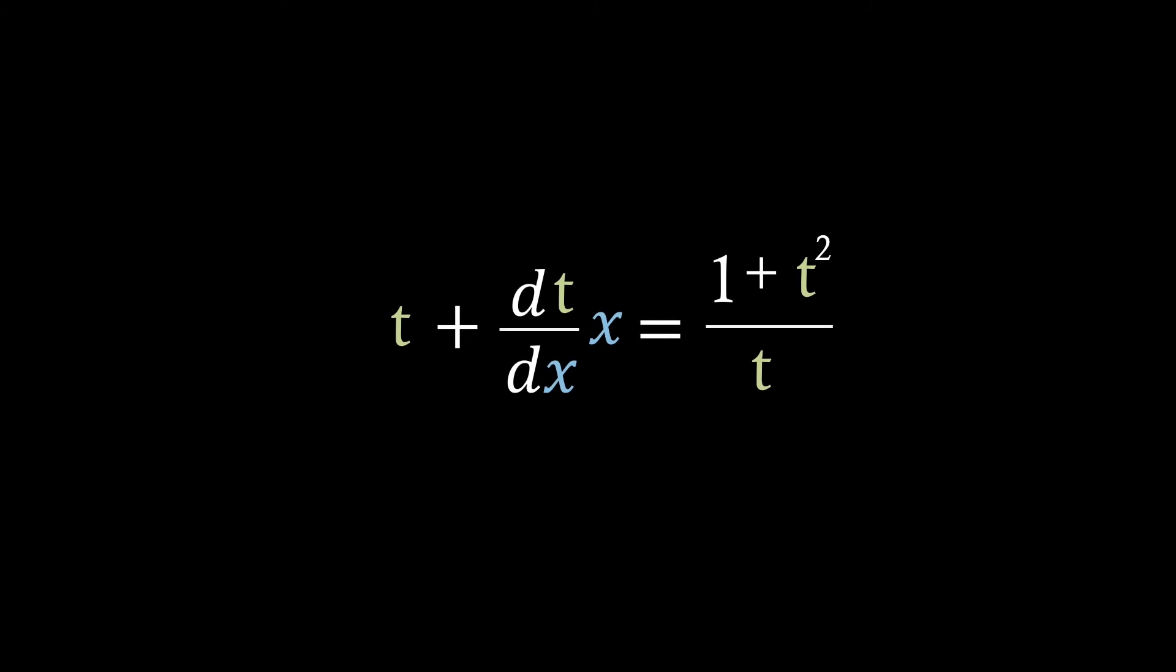Well now we can just substitute this back in and we'll get a linear differential equation in terms of t and x which is actually separable just as we did in part 1. Taking t from both sides we're just left with dt over dx times x equals 1 over t.